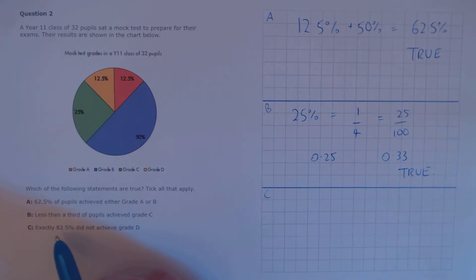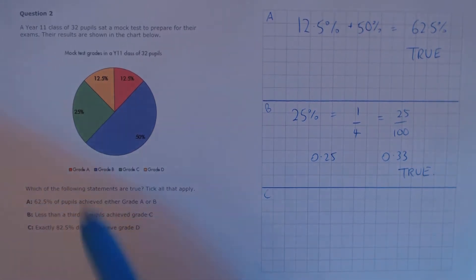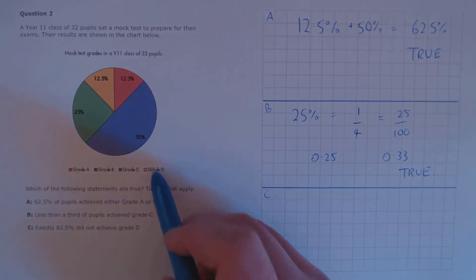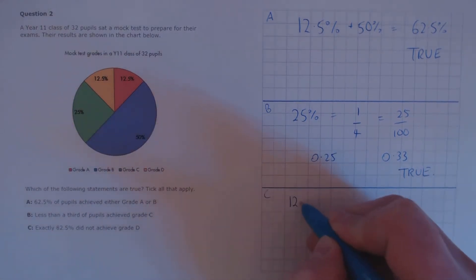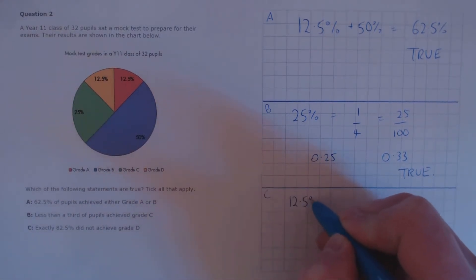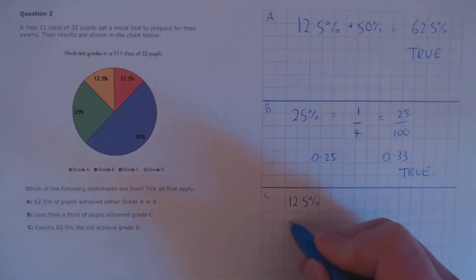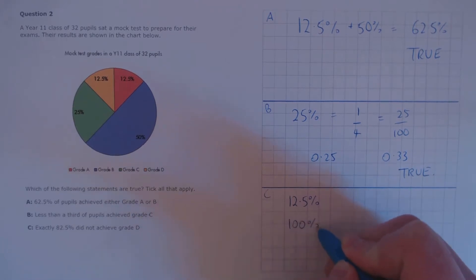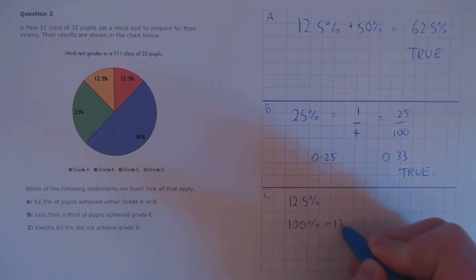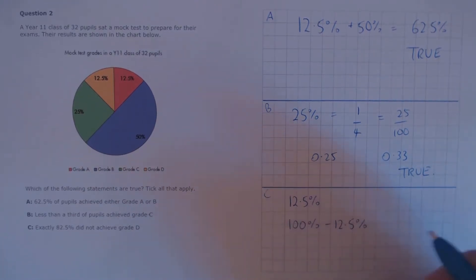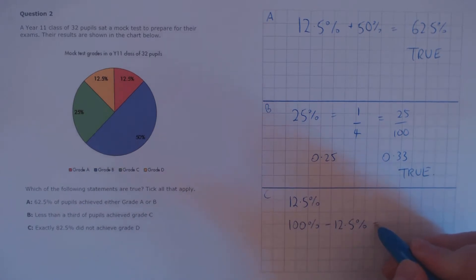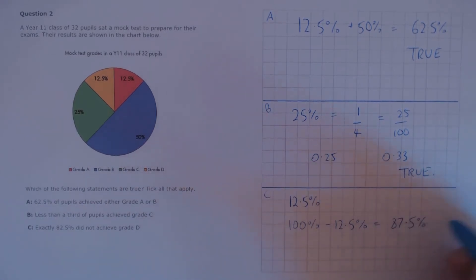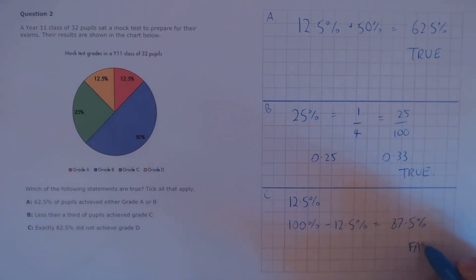Now for C: exactly 82.5% did not achieve Grade D. We need to take those that achieved Grade D — that's 12.5% — and take that away from 100%. So 100% minus 12.5% gives us 87.5%, which is not 82.5%, so that's false.